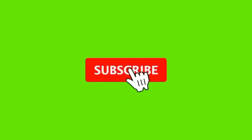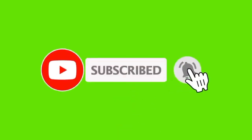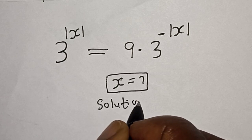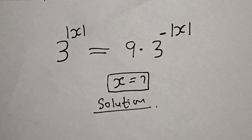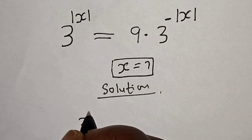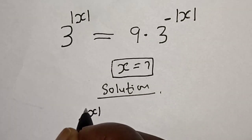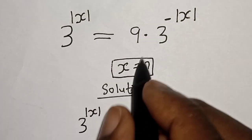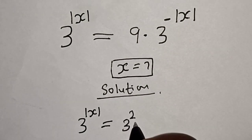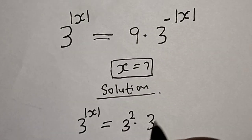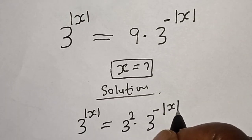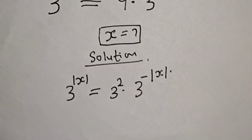Solution: we have 3 raised to the power of absolute value of s is equal to 9, which can be written as 3 squared, multiplied by 3 raised to the power of minus absolute value of s.